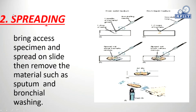The second method is spreading. Bring the excess specimen and spread it on the slide, then remove the material such as sputum and bronchial washing. We will take a specimen, spread it in an oval shape on the smear slide, and remove the excess material. Then heat fix it.